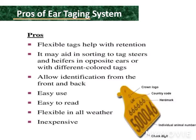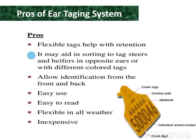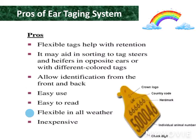Let's discuss some advantages of the tagging system. Tags are flexible, which helps in retention. The tagging system helps in sorting steers and heifers. It allows easy identification. Tags are easy to use and read, flexible in all weathers, and cheap.